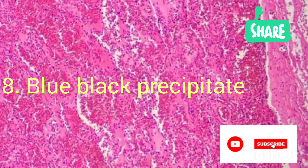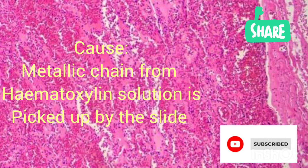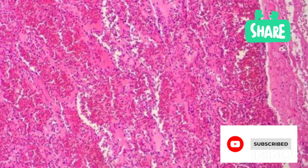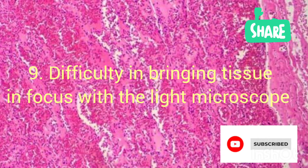Another problem is when you have blue-black precipitate on top of your section. The cause could be that the metallic sheen that develops on most hematoxylin solutions has been picked up by the slide. The solution is to ensure you filter your hematoxylin daily depending on your work volume. If you have a large volume, the hematoxylin solution needs to be filtered before staining your slides so you don't have blue-black precipitate on your slides after staining.